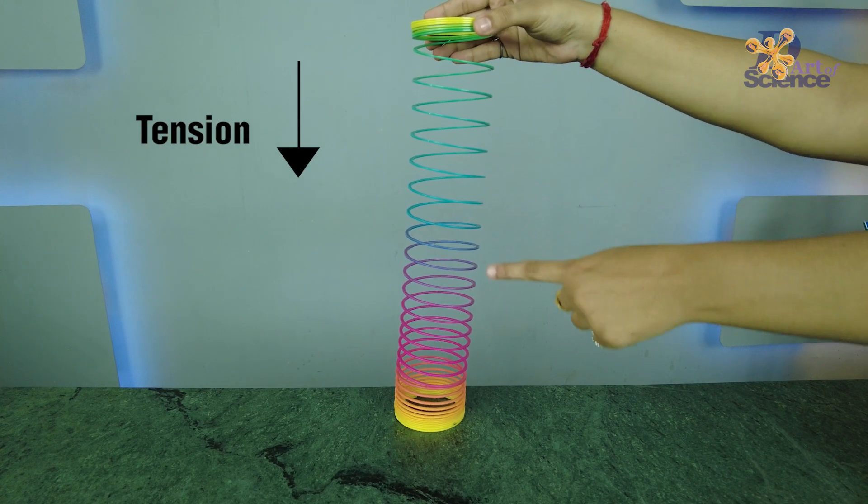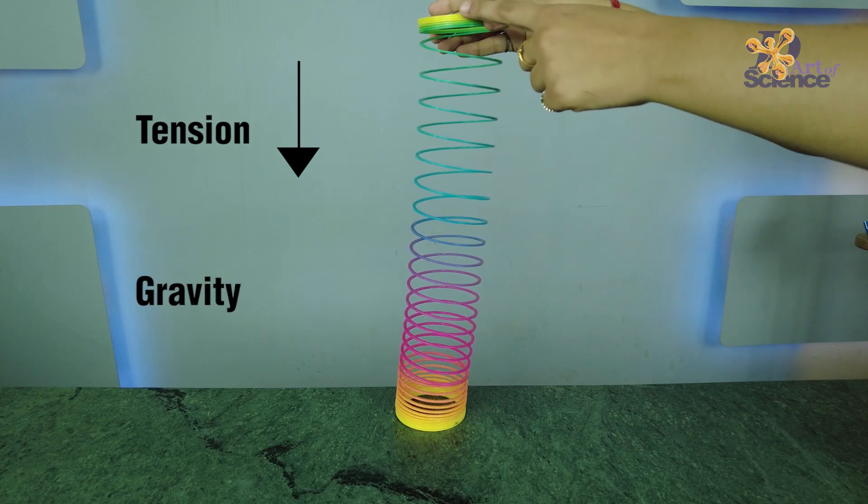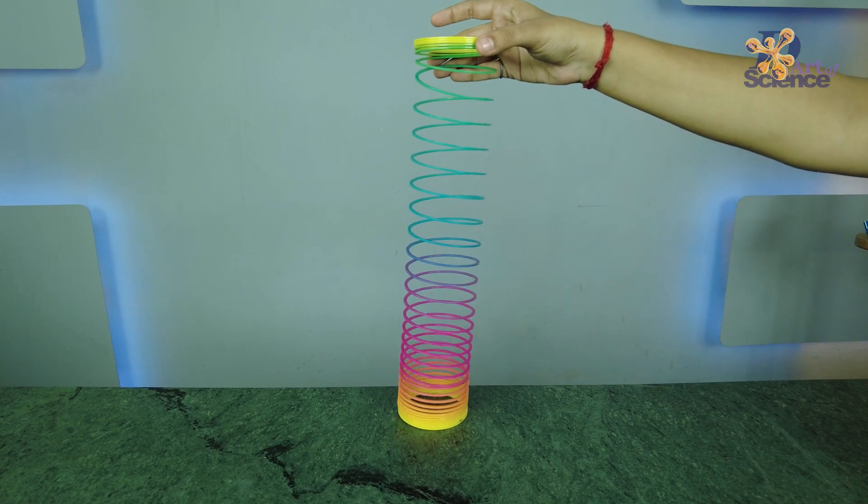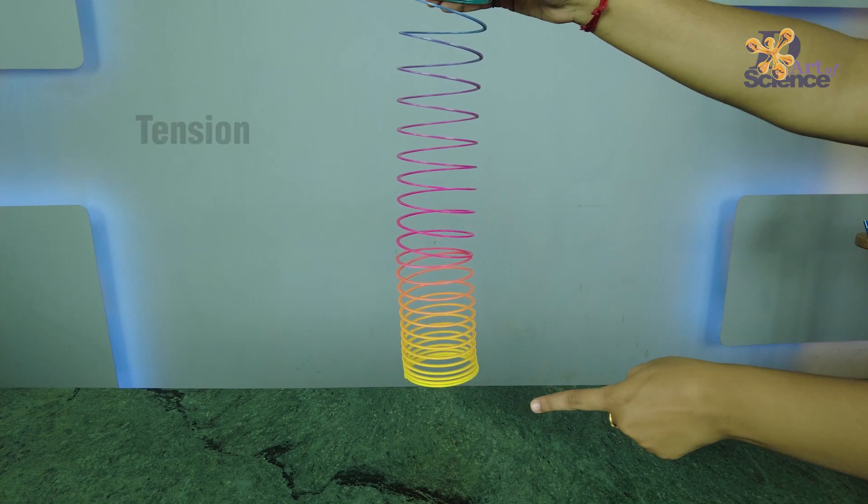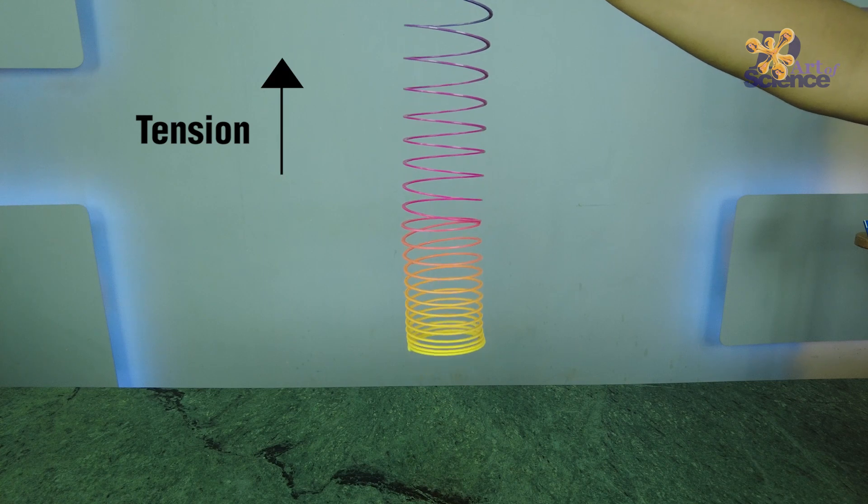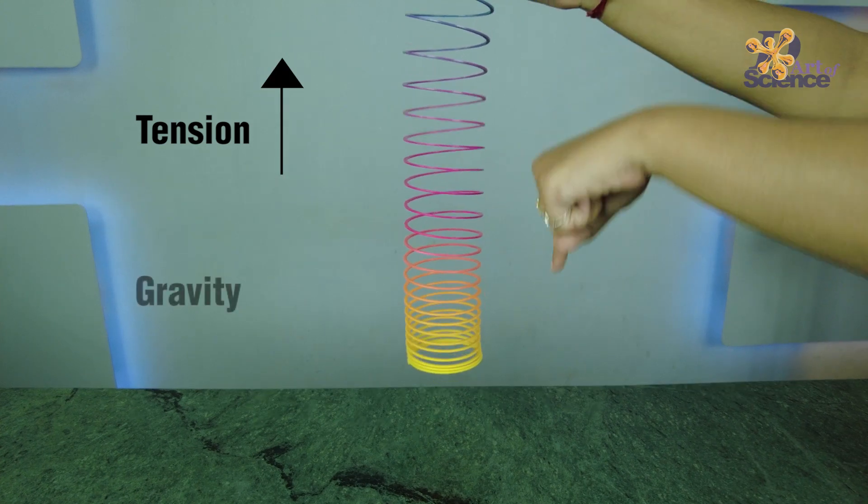On the other hand, the tension in the slinky causes the bottom to move in the upward direction but gravity is pulling it downwards. If gravity was stronger the bottom part would have started to fall slowly. If the tension within the slinky was stronger then the bottom would have moved slightly upwards.